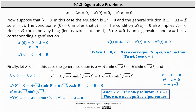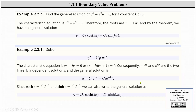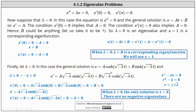Now we consider lambda less than 0. In this case, the general solution is in the form of x equals a hyperbolic cosine of square root negative lambda t plus b hyperbolic sine of square root negative lambda t. This is the general solution because the corresponding characteristic equation, when lambda is less than 0, is r squared minus lambda equals 0, where the roots are plus or minus square root negative lambda. In general, when the characteristic equation has two distinct real roots — for example, plus or minus k — we can write the general solution as y equals c1 e to the kx plus c2 e to the negative kx. Using the definitions of hyperbolic cosine and hyperbolic sine, we can also express the general solution as y equals d1 hyperbolic cosine kx plus d2 hyperbolic sine kx. We use square root negative lambda because if lambda is less than 0, then negative lambda is greater than 0.